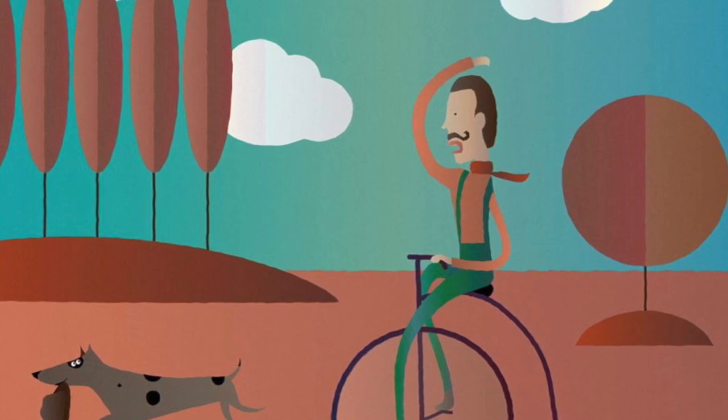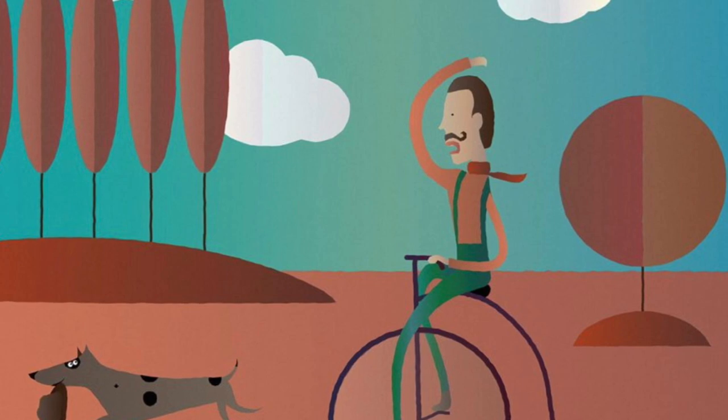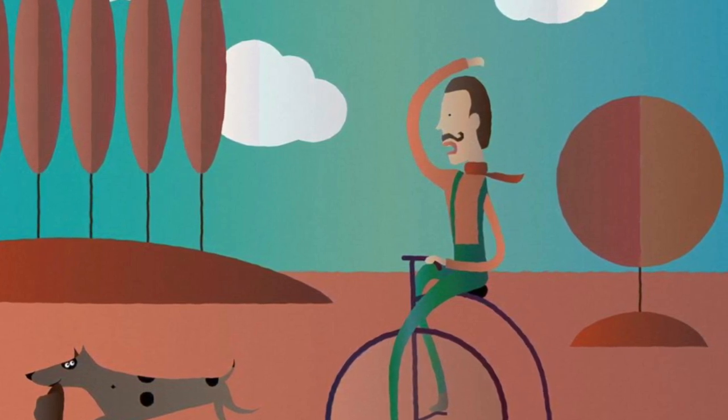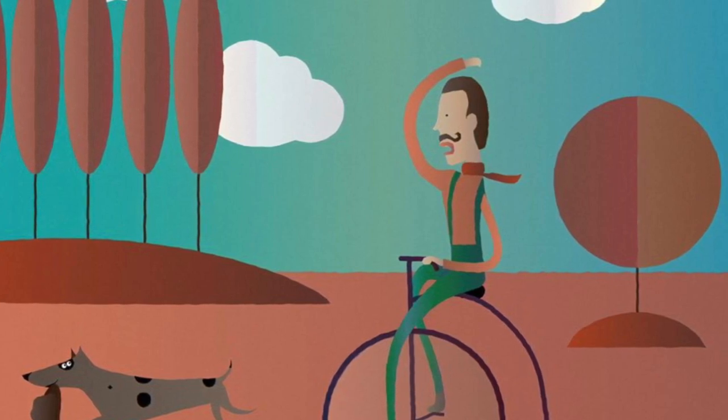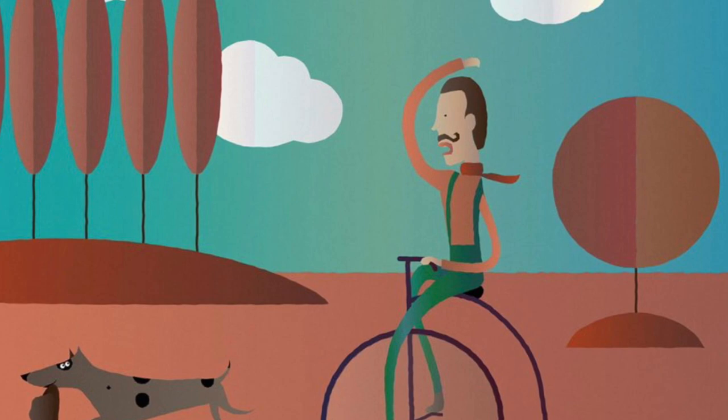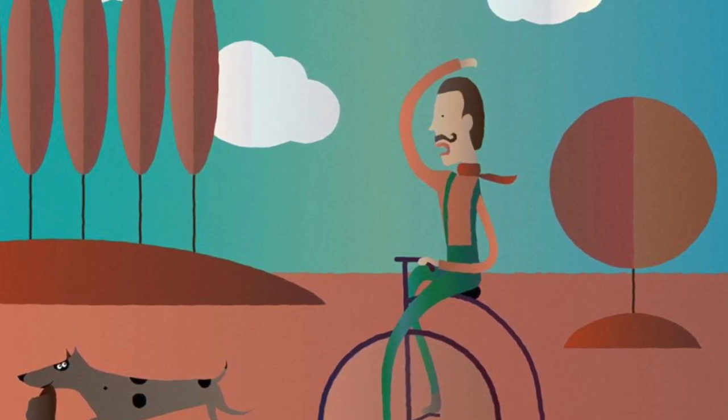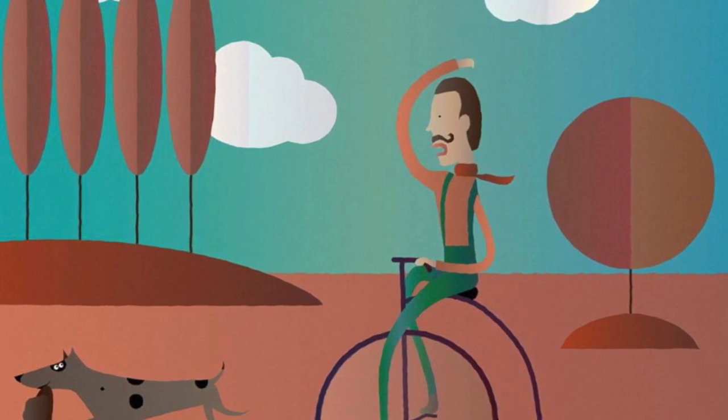'I'll give that two-wheeled outlaw best. It's shaken all my nerve, to feel it whistle through the air, and plunge, and buck, and swerve. It's safe at rest, in Dead Man's Creek. We'll leave it lying still. A horse's back is good enough, henceforth, for Mulga Bill.'